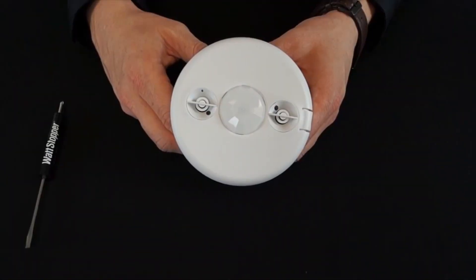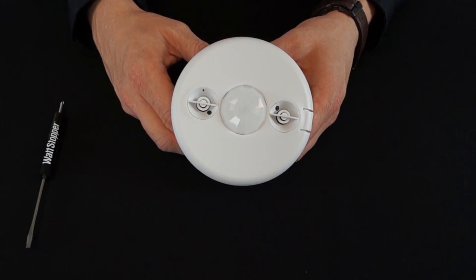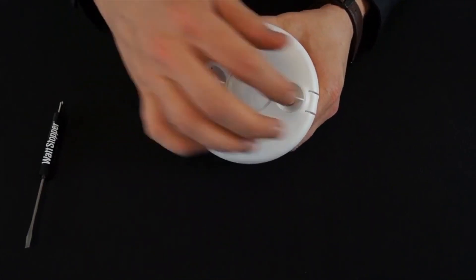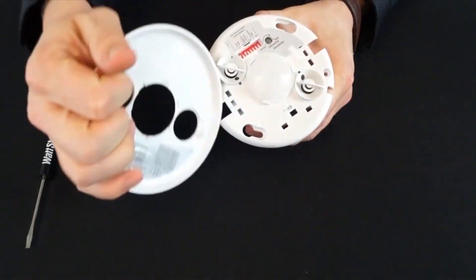The most common question that comes up following the installation of the DT-300 series occupancy sensor is: how do I adjust the time delay and sensitivity of the product to my liking? To make adjustments, remove the cover of the occupancy sensor.